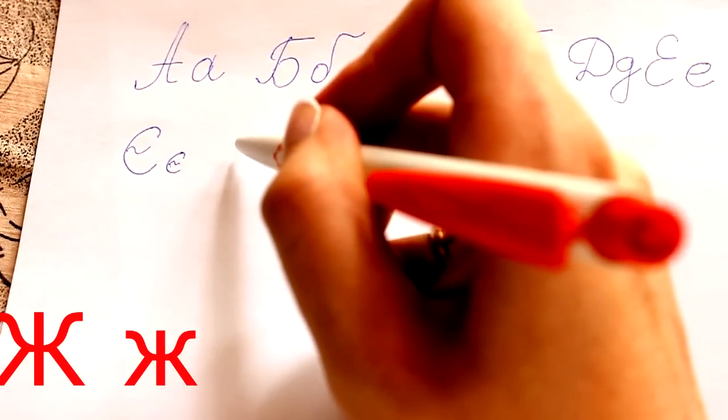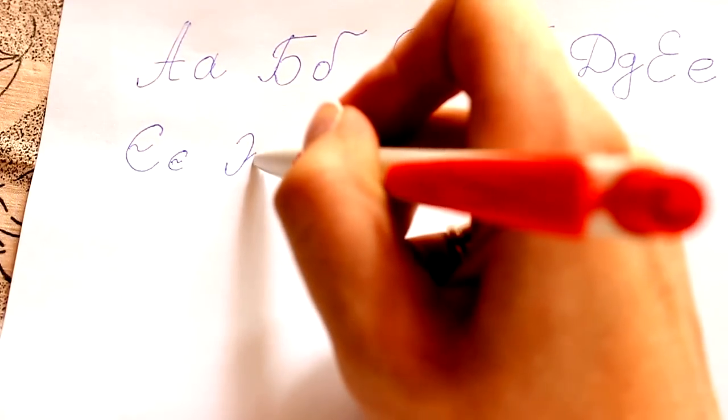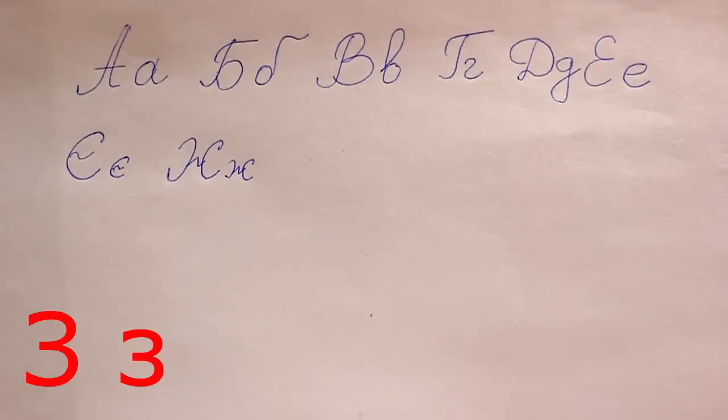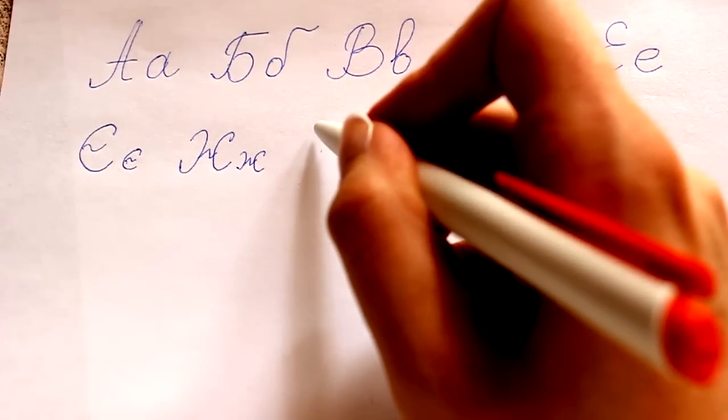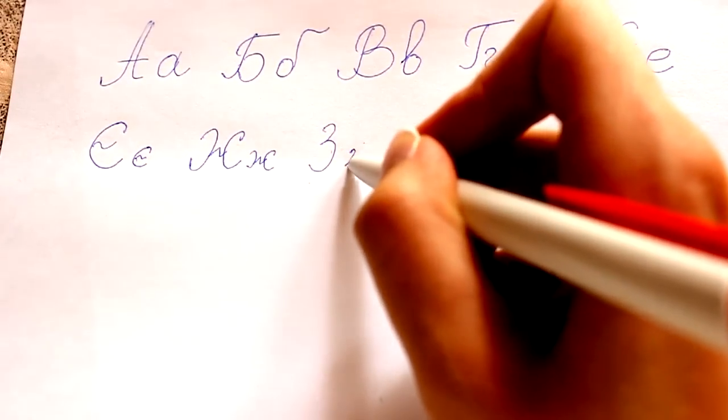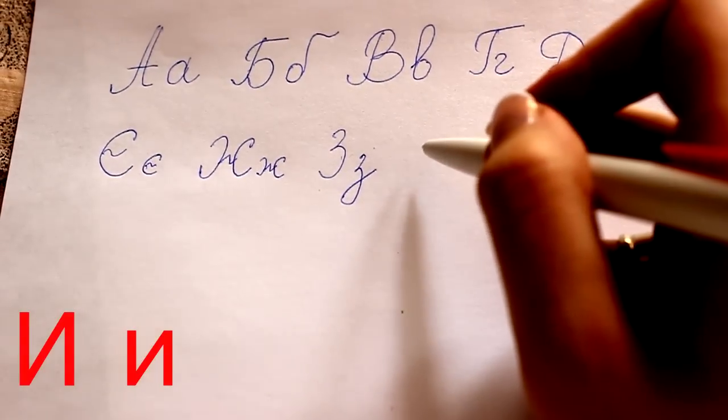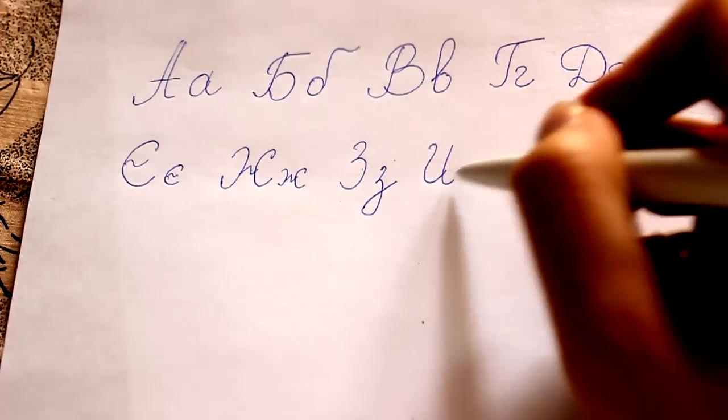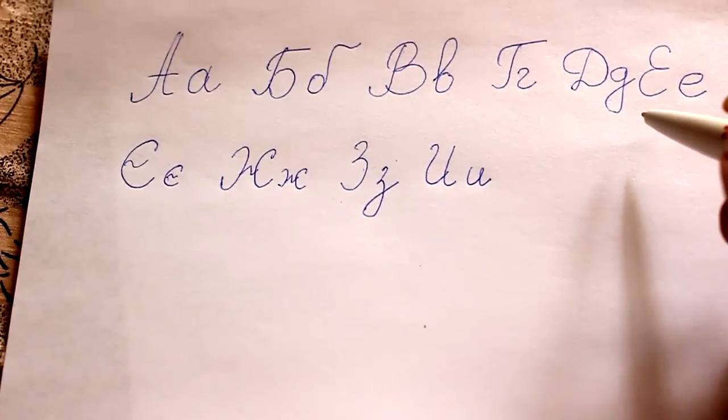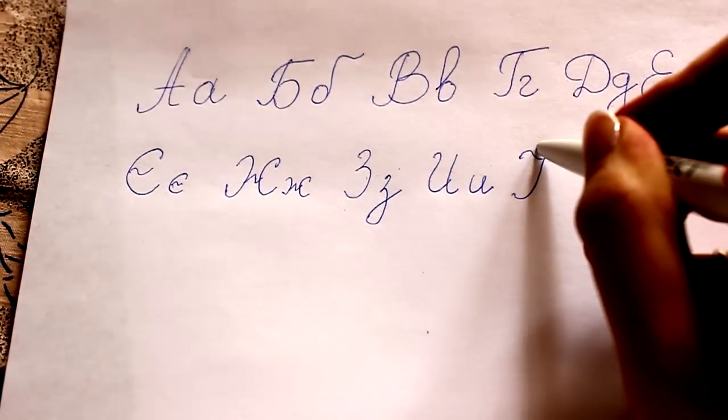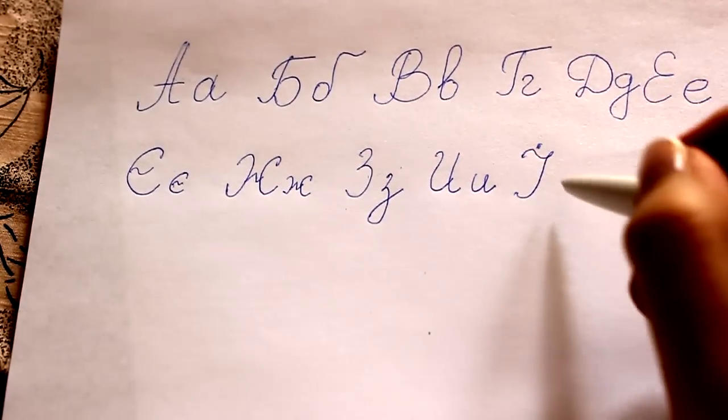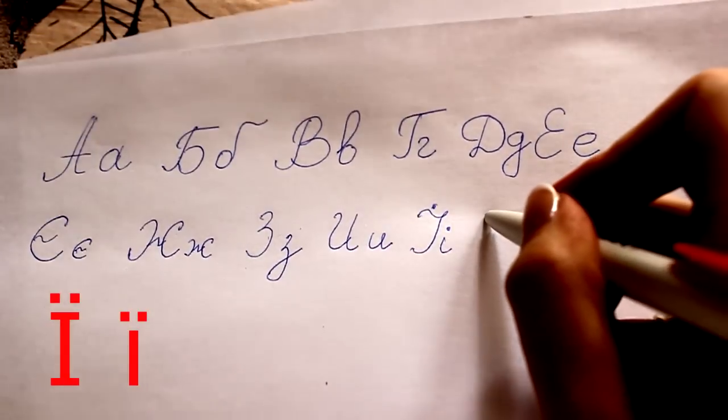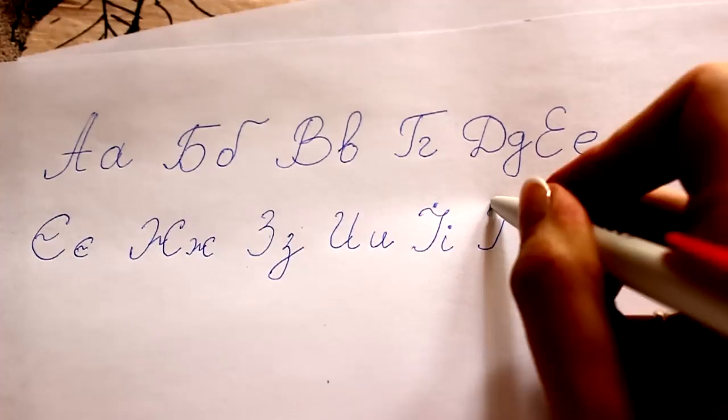Zh - Zhuvaty, Zhytlo. Z - Zayts. I - We don't use big letter I, but I will show you anyway how you can write it. I - You can also put a dot here and you can write without it. Ye - Two dots here.